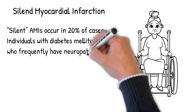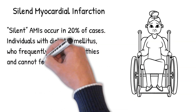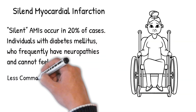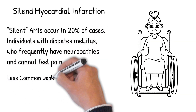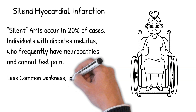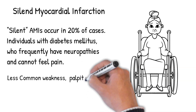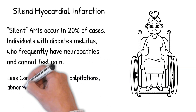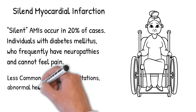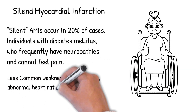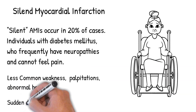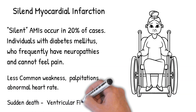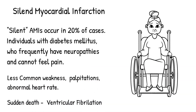Other less common symptoms include weakness, palpitations, and abnormal heart rate. These symptoms are caused by a massive surge of catecholamines from the sympathetic nervous system. Sometimes infarction causes sudden death due to the development of ventricular fibrillation.